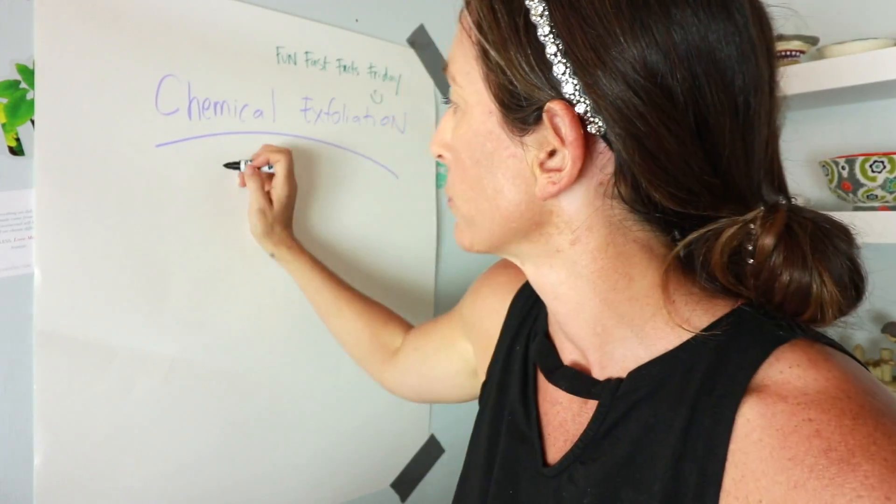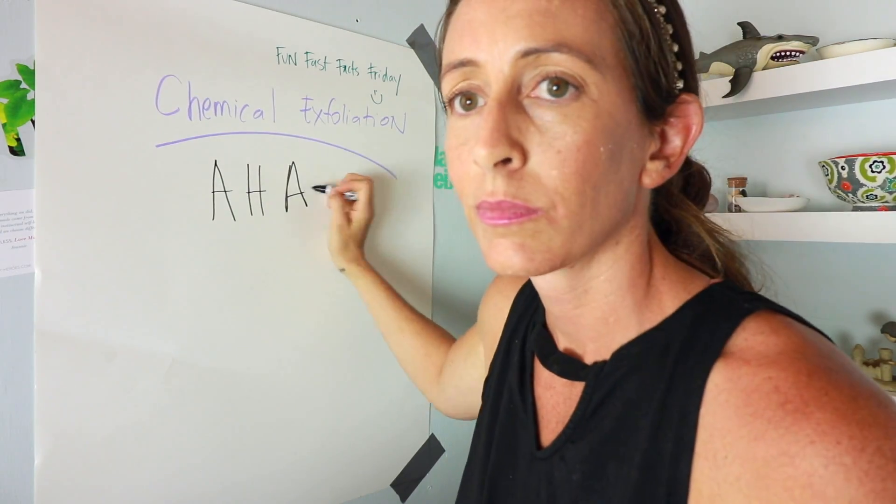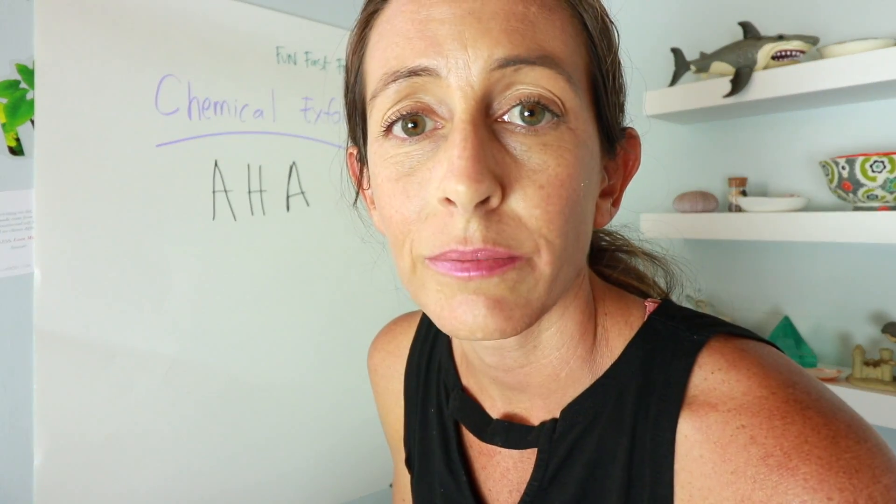There are several types of chemical exfoliants, but what I'm going to focus on are AHAs. What is an AHA? It's a group of ingredients known as alpha hydroxy acids — organic carboxylic acids in which there is a hydroxy group at the two or alpha position of the carbon chain.